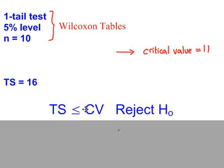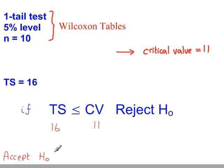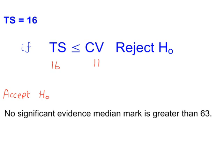Now you need to remember this statement here, that if the test statistic is less than the critical value, or if the test statistic is equal to the critical value, you must reject H0. OK, so if this is true, if this is less than or equal to this, you reject H0. The values we have are these. Clearly, that number there is not less than or equal to this. So we're not going to reject, we're going to accept H0. This is our test conclusion. There is no significant evidence that the median mark is greater than 63.